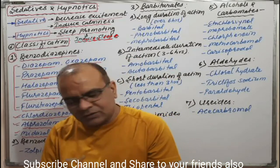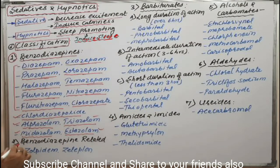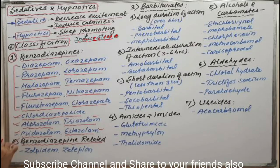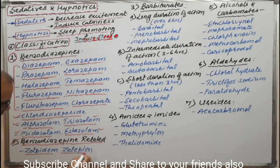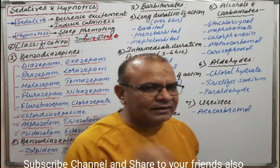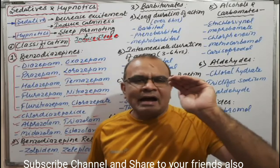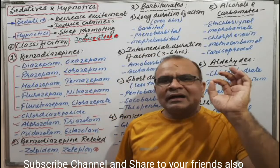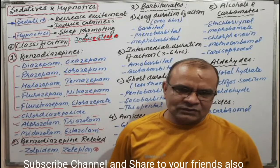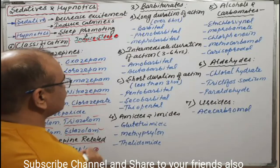The next category is benzodiazepine-related agents. These two drugs — zolpidem and zaleplon — have a similar structure related to benzodiazepines but do not actually contain the benzodiazepine core. These are called benzodiazepine-related agents.